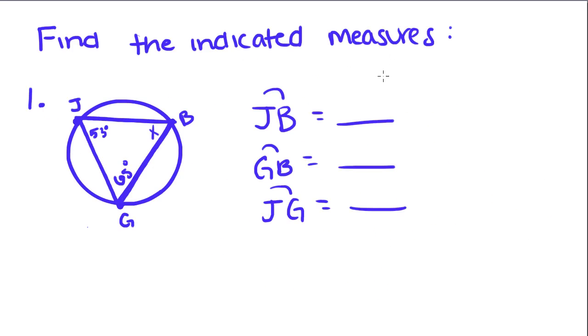Now we're going to do an example. We know we have these three angles which form a triangle. Each one of these angles is an inscribed angle because its vertex is on the circle and its sides form chords of the circle. First they want the measure of arc JB.